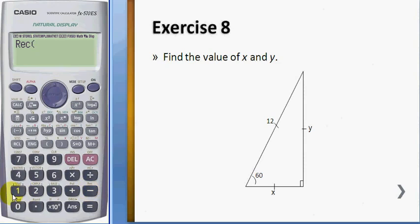And you have the value of r, comma, and followed by the degree, 60. Then the answer is your x is 6 and your y is 10.39.